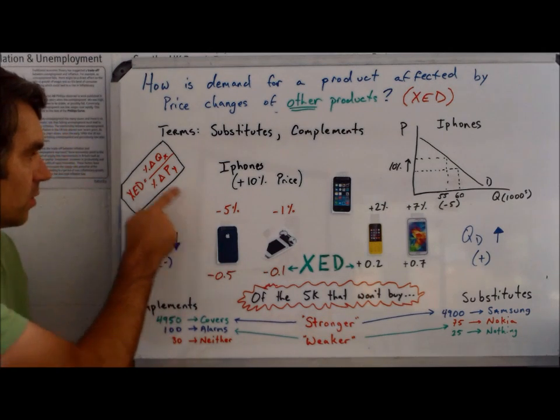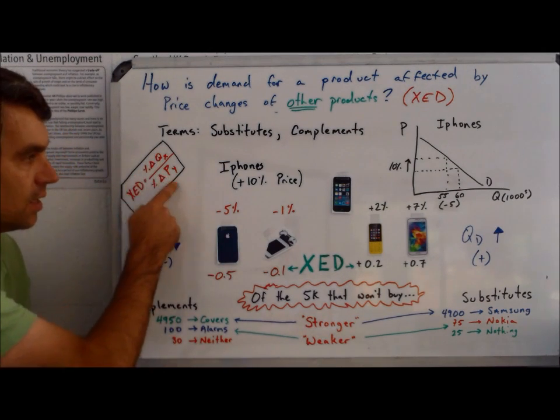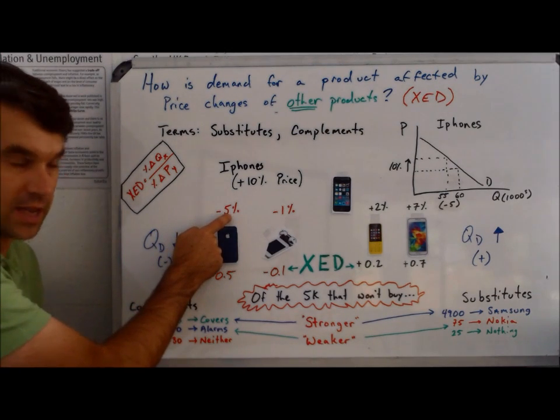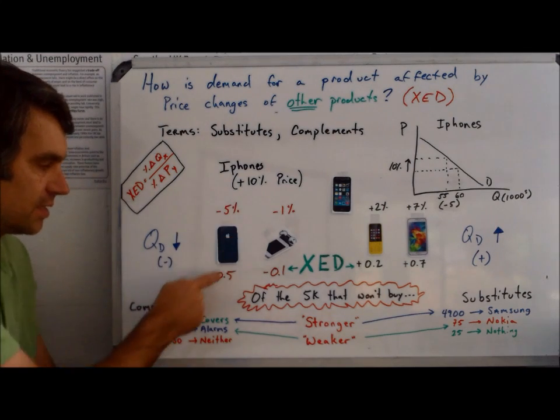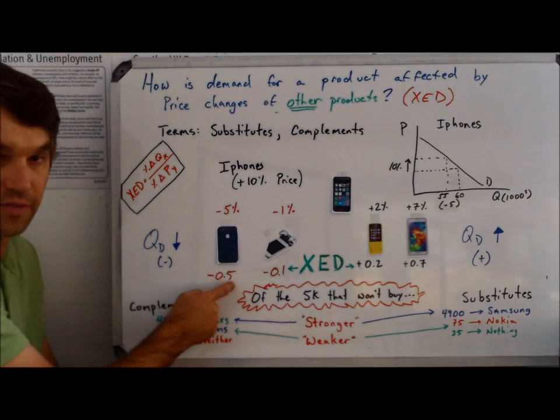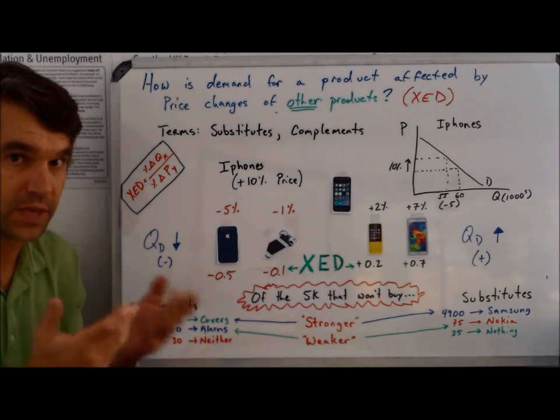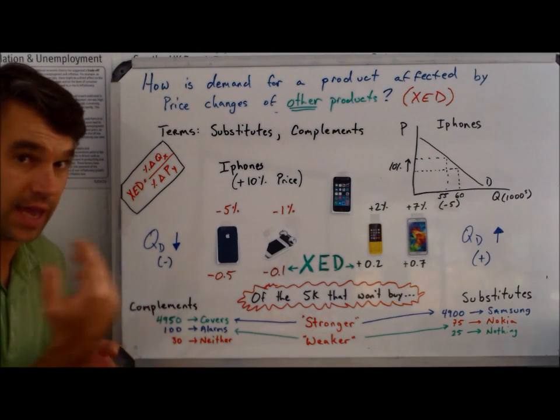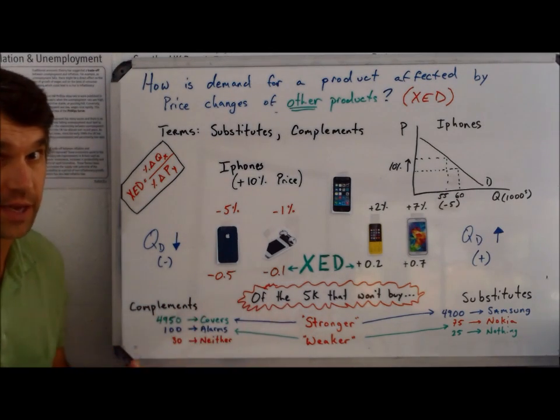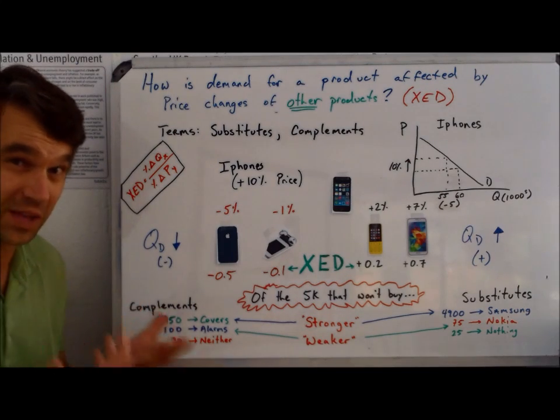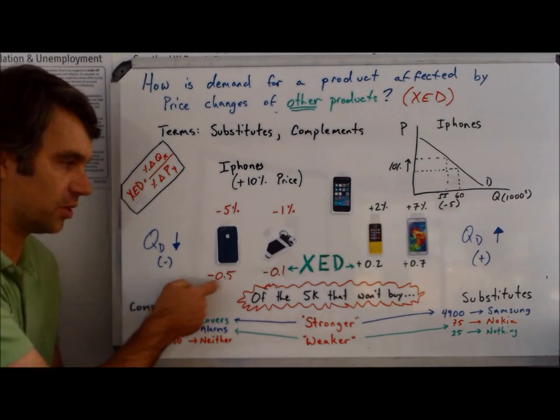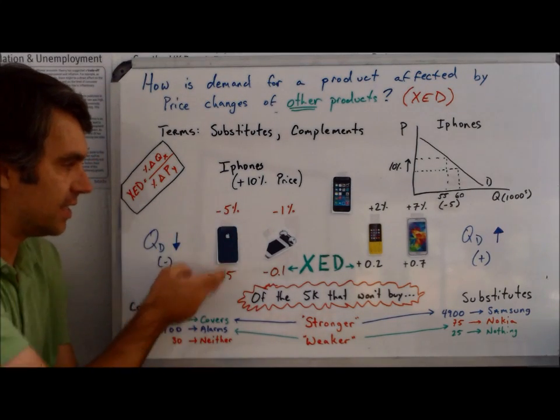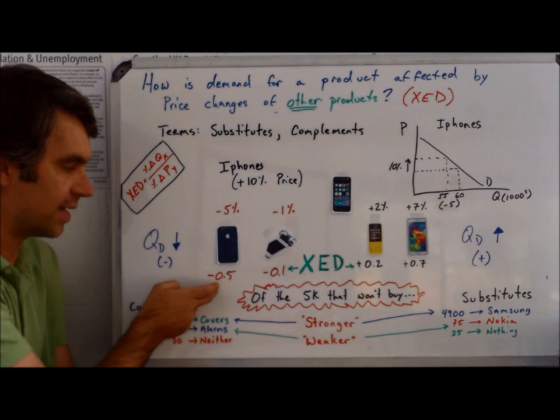If we do the math, we're doing percent change in quantity demanded divided by percent change in price. This is negative 5% divided by 10%, and the XED is going to be negative 0.5. Keep in mind, when we did PED, everything was absolute value. That's not true for XED, and it's not true for YED. Here, the values really matter. Make sure not to lose the negative or the positive. It's important to keep this.